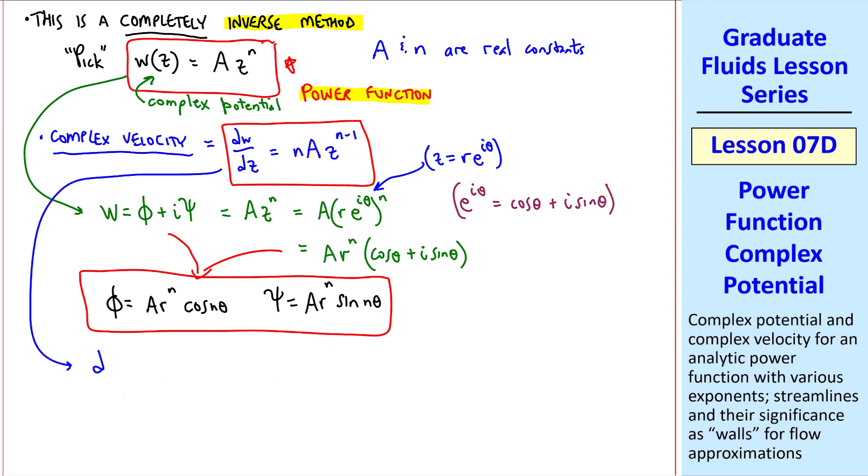Similarly, for the complex velocity, we again set z equal r e to the i theta, and z is raised to exponent n minus 1. We'll expand this to n times a times r to the n minus 1 times e to the i n theta times e to the negative i theta. But similar to this equation, e to the i n theta is cosine n theta plus i sine n theta. So our complex velocity becomes n a r to the n minus 1 times cosine n theta plus i sine n theta times e to the negative i theta.